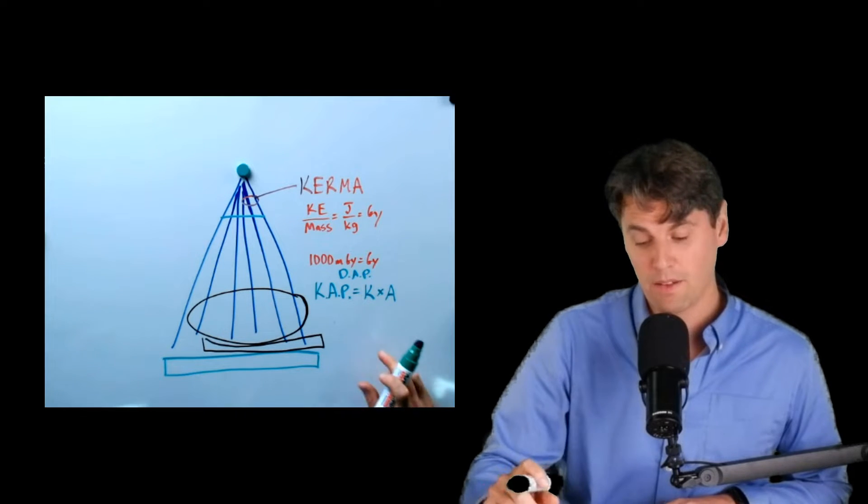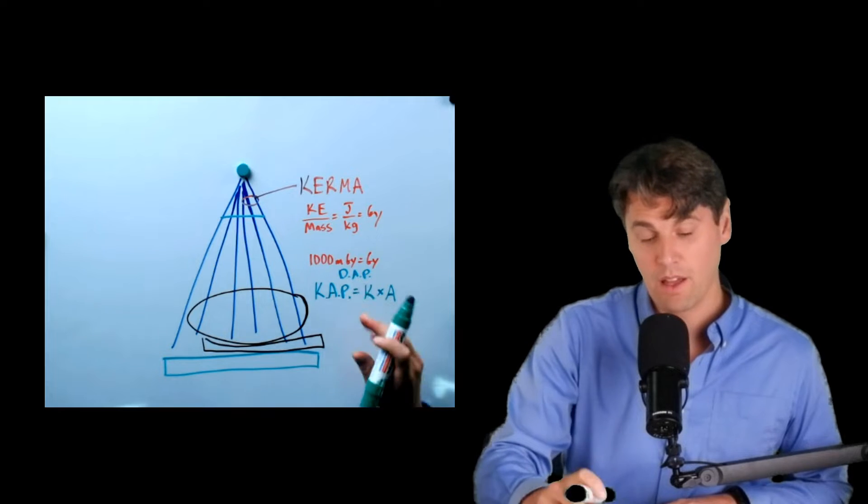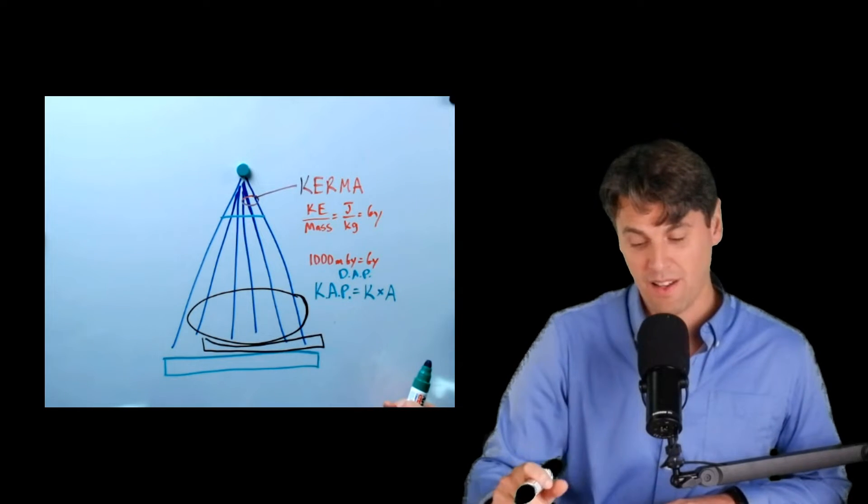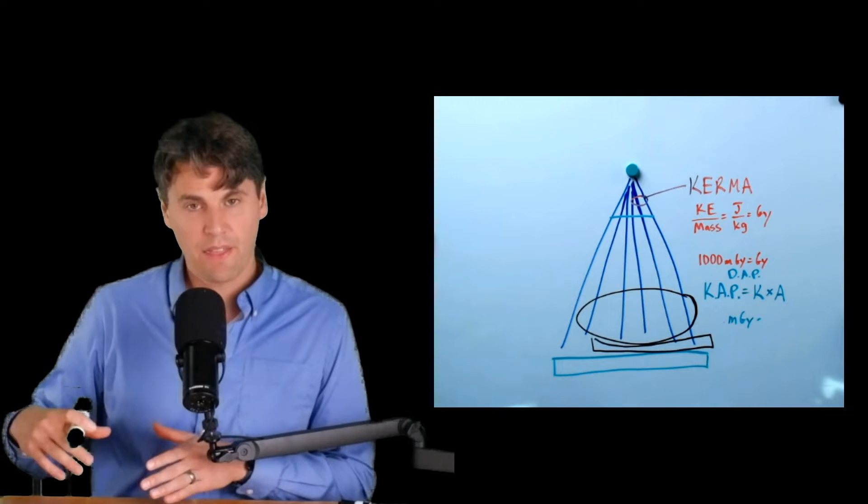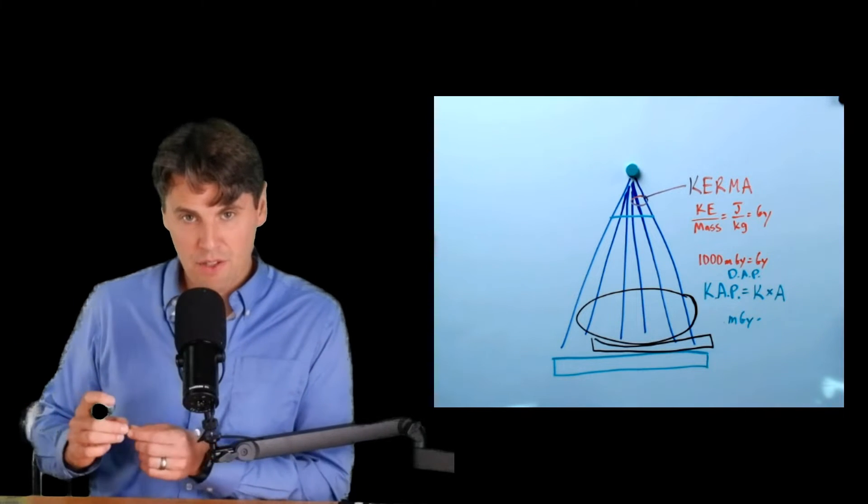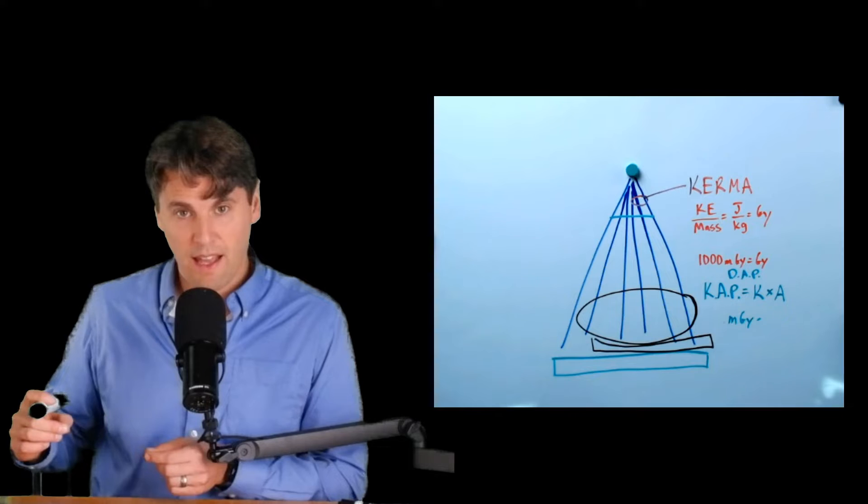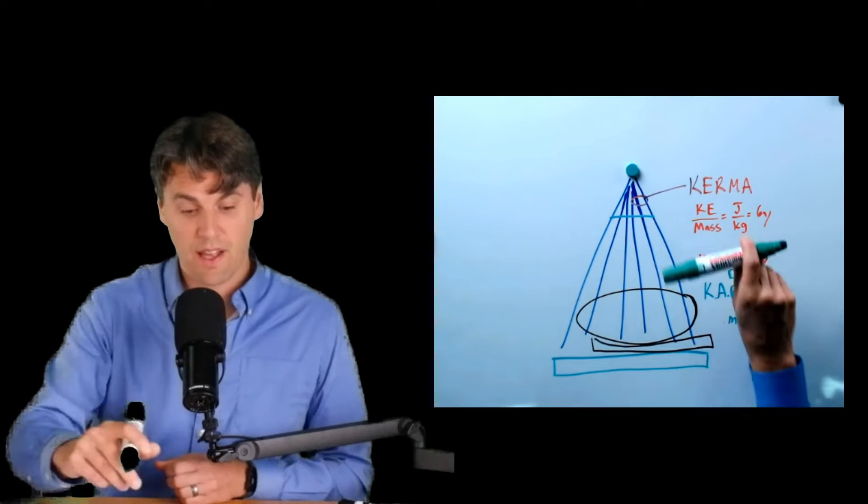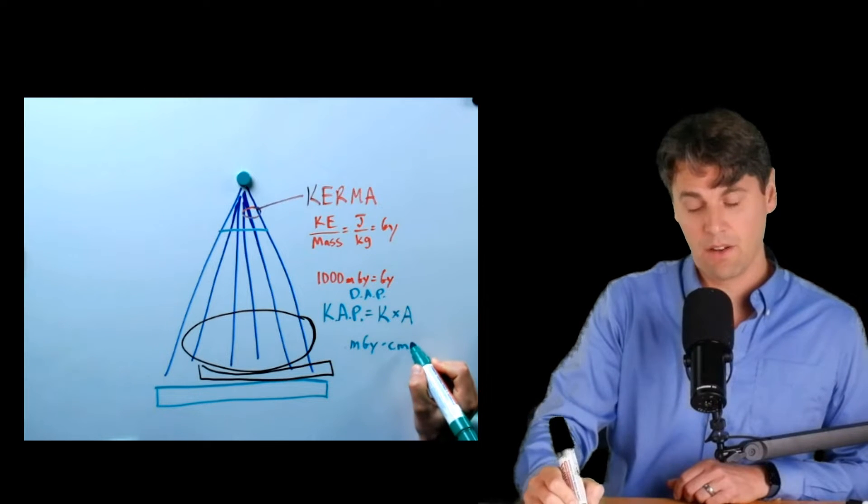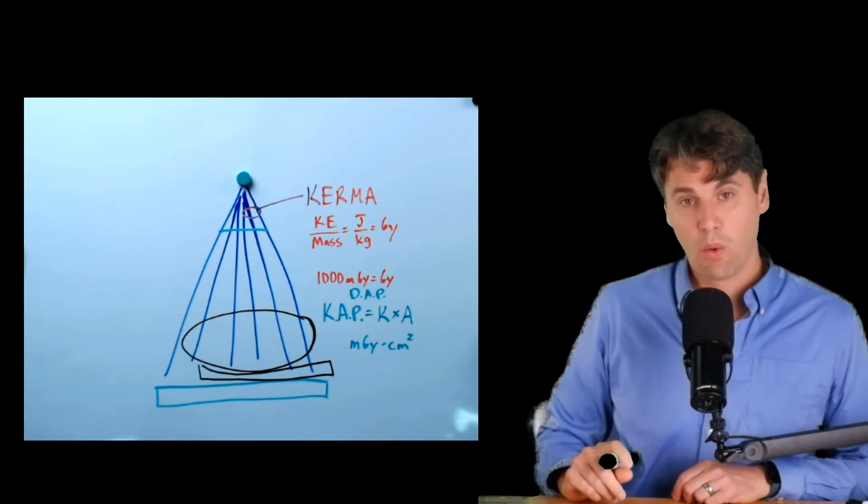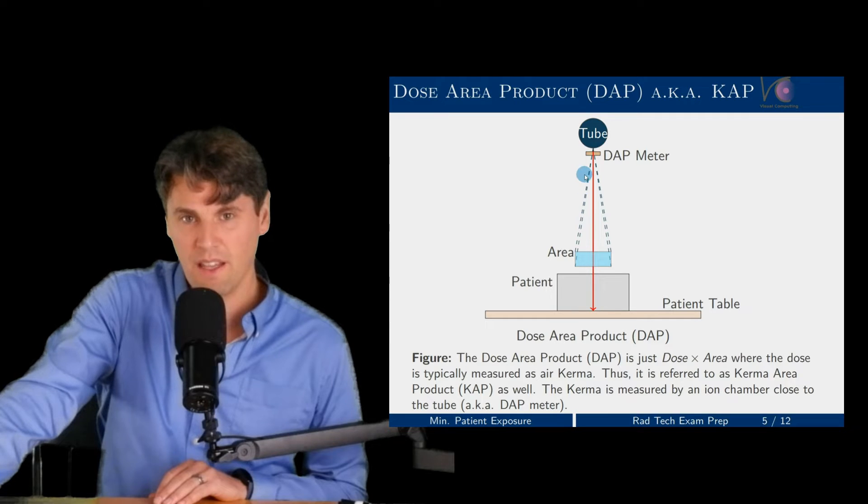This is also called the dose area product, because Kerma is just a unit for the dose that's measured in air. If we have a little rectangular area, we can think about that as being measured in centimeters on one side by centimeters on the other side for the area that the x-rays are going to be irradiated. We're going to have centimeters multiplied by centimeters or centimeters squared. You can see here we have our tube. We have a dose area product meter. Then you can see the beam that is actually irradiating the patient here.